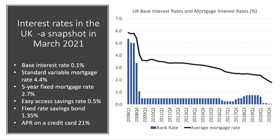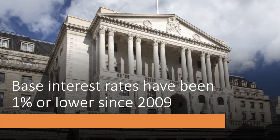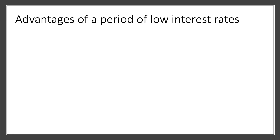However, the annual percentage rate — the APR on a credit card — was just over 20%. So the rate of interest on a credit card is well more than 40 times the base rate of interest. The base rate set by the Bank of England, our central bank, has been below 1% since 2009 — a remarkable period of very low interest rates.